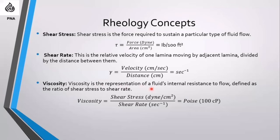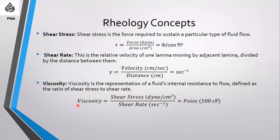Viscosity is the representation of a fluid's internal resistance to flow, defined as the ratio between shear stress and shear rate. Viscosity equals shear stress divided by shear rate, in dyne per centimeter squared per second, which equals poise. But poise is a big unit, so we calculate viscosity normally in centipoise, which equals one hundredth of a poise.